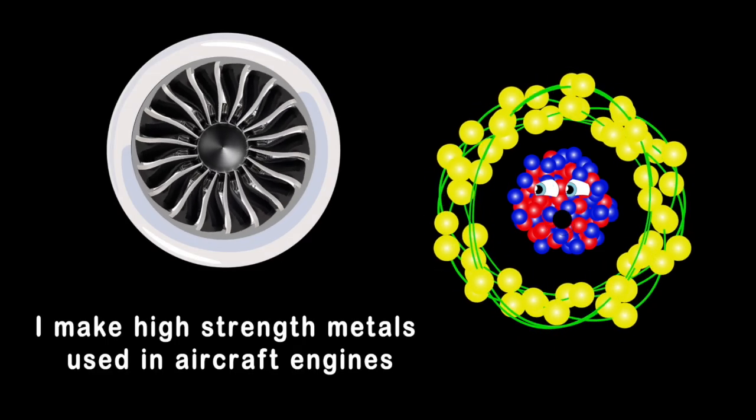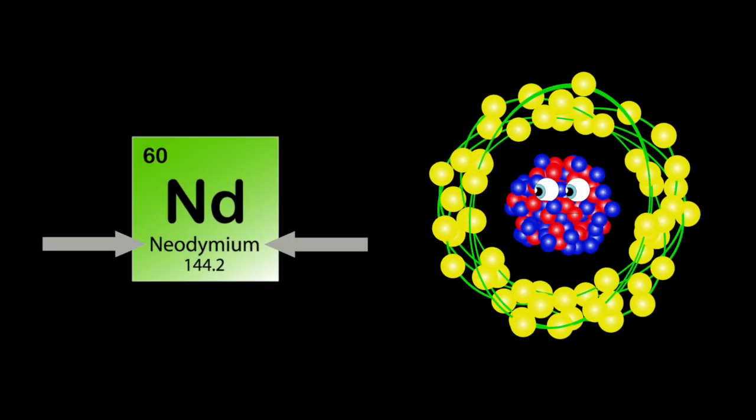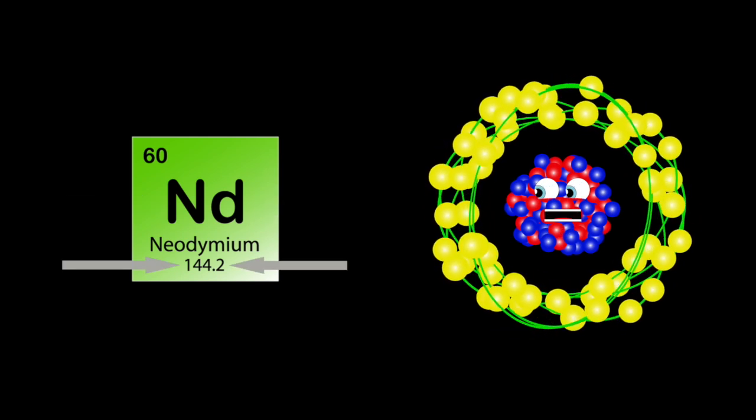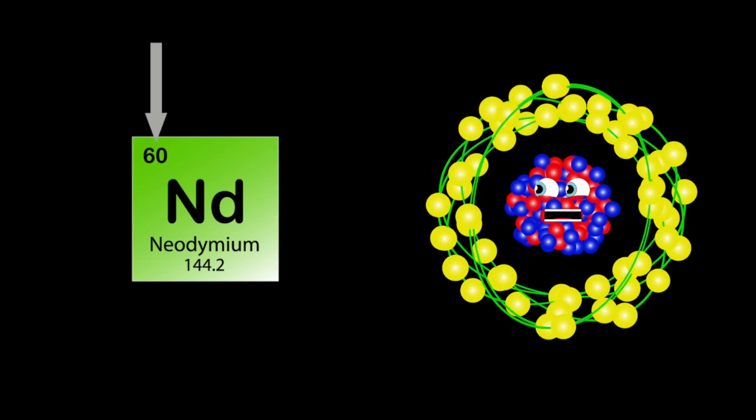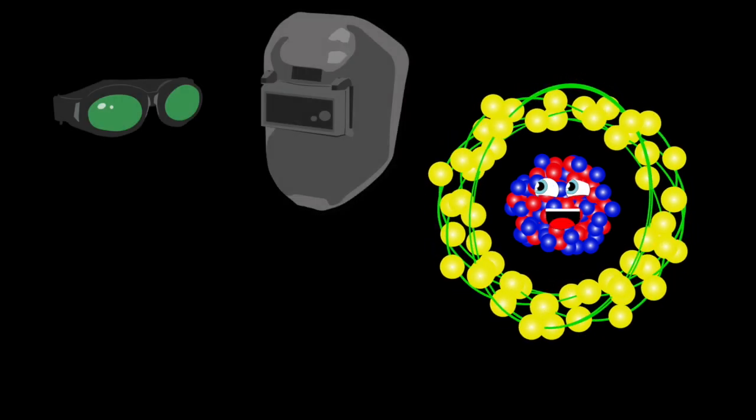I'm neodymium, my symbol is ND, my atomic mass is 144, my atomic number is 60. I'm used to make goggles for glass blowers and welders, and I'm using some glass to make spectrometers.